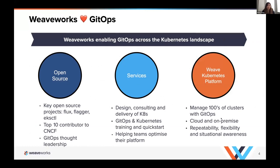Weaveworks created the term GitOps to describe a method that we used internally to create a resilient, reproducible production system. Ever since we defined our set of GitOps principles and methodologies, it's been widely adopted by major companies around the world, including the major public cloud platform providers. Weaveworks' core foundation can be grouped into three categories — enabling GitOps across the Kubernetes landscape. You're probably familiar with a lot of the open source projects that Weaveworks has created, such as Flux, Flagger, eksctl, Scope, Weavenet, WeaveCortex, and KubeDiff, just to name a few.